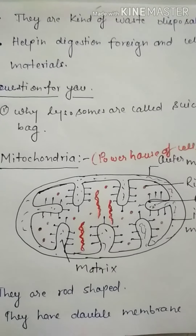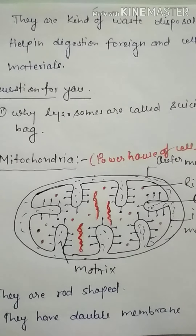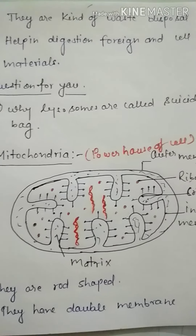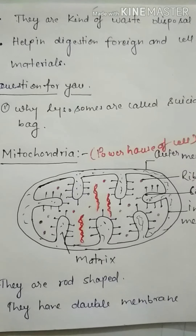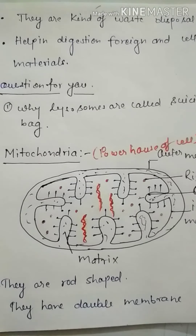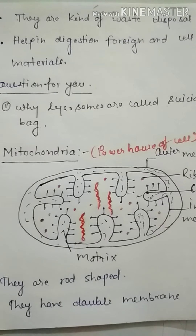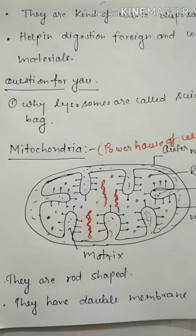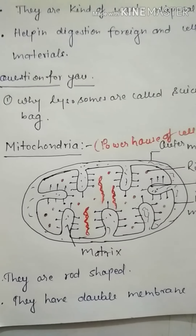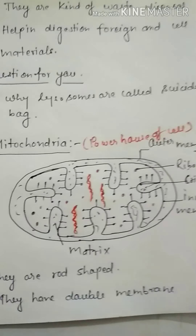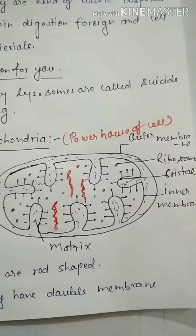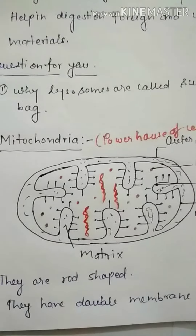Next, a question for you: Why are lysosomes called suicide bags? In the next video, we will give the answer to this question. Next cell organelle is mitochondria. This is also called the powerhouse of the cell.